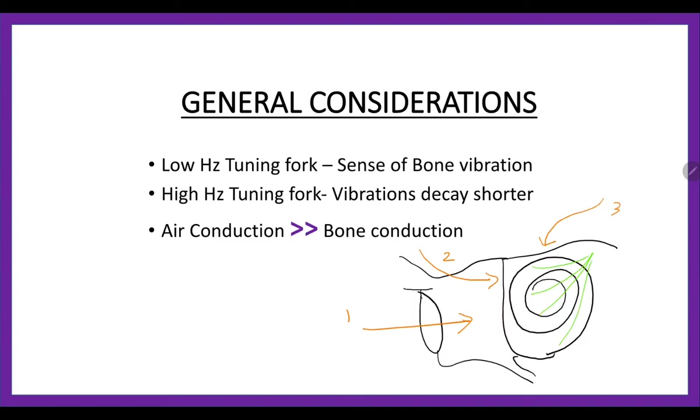Next, we see very important general considerations. One: if we take low hertz tuning fork, that is 128 and 256, that gives a sense of bone vibration, whereas high frequency tuning fork vibrates and decays in a shorter period of time. Then, air conduction is always greater, or twice longer, than bone conduction. Now air conduction is from the pinna to footplate of stapes, and after that it is bone conduction.